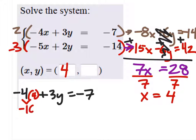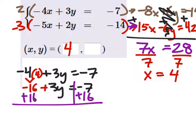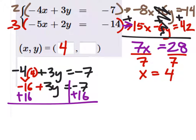When we multiply those two, we get negative 16. Now plus 3y equals negative 7. So I'll add 16 to both sides, so that the y's are on their own side of the equal sign. And I get 3y equals 9. And I'll divide both sides by 3 and find that y is 3.